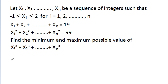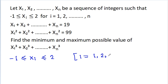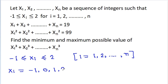We have given -1 ≤ xᵢ ≤ 2 where i = 1, 2 up to n. So xᵢ can be equal to -1, 0, 1, and 2, because x₁, x₂ up to xₙ are integers.